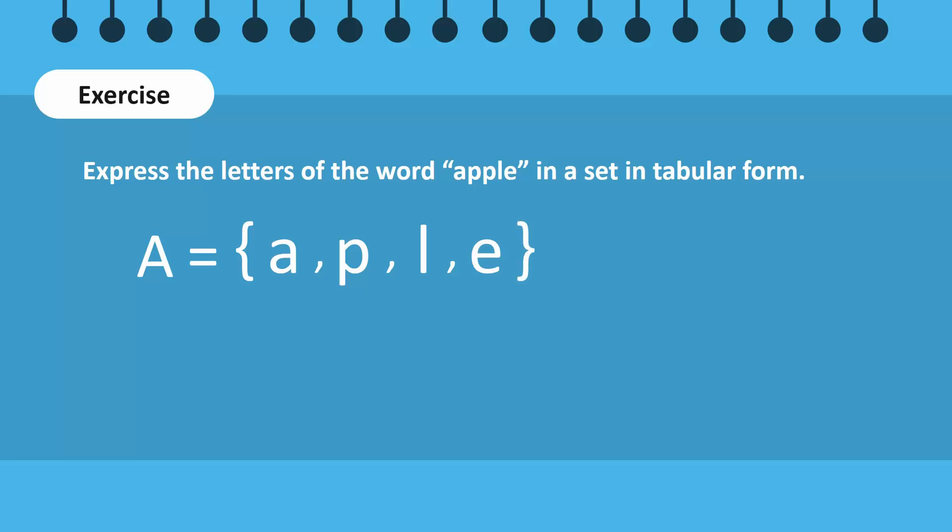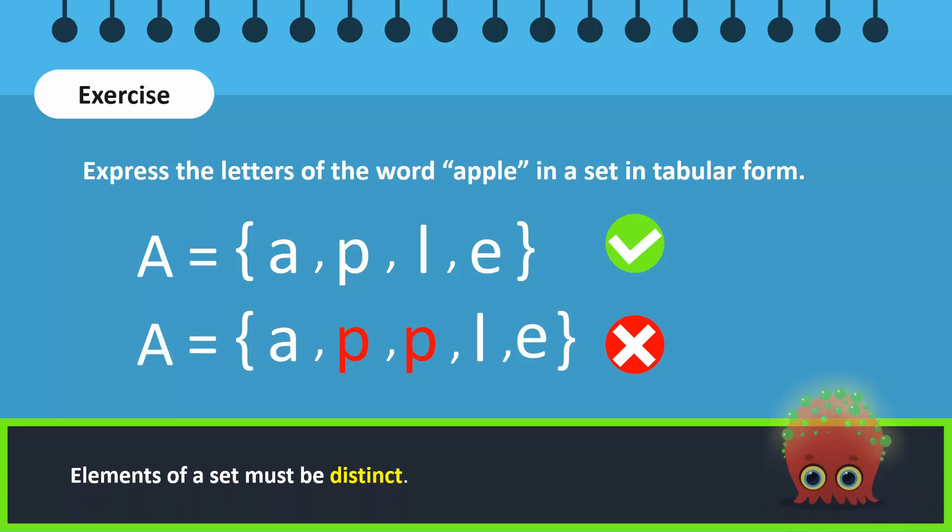Observe that there is only one P, not two, because the elements of a set must be distinct. We do not repeat similar elements in a set.